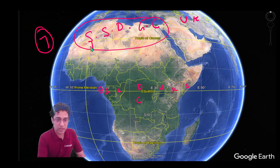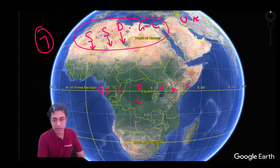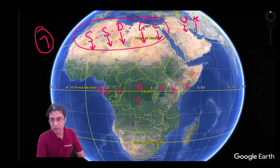So the mnemonic covers: S for Sao Tome and Principe, Somalia, Democratic Republic of Congo, Gabon, Congo, Uganda, and Kenya.